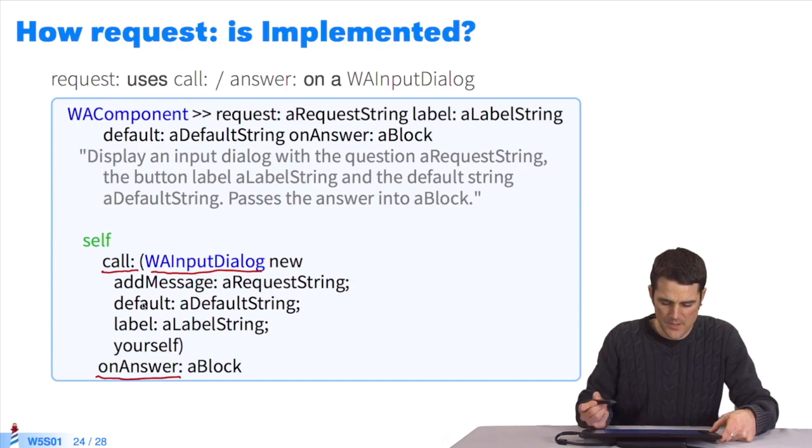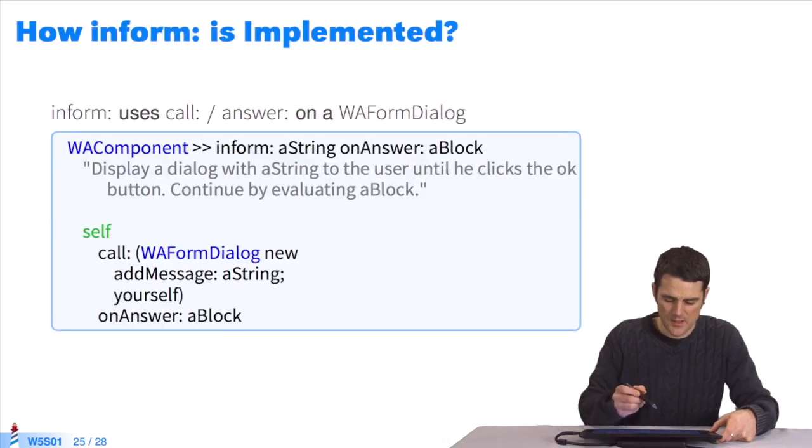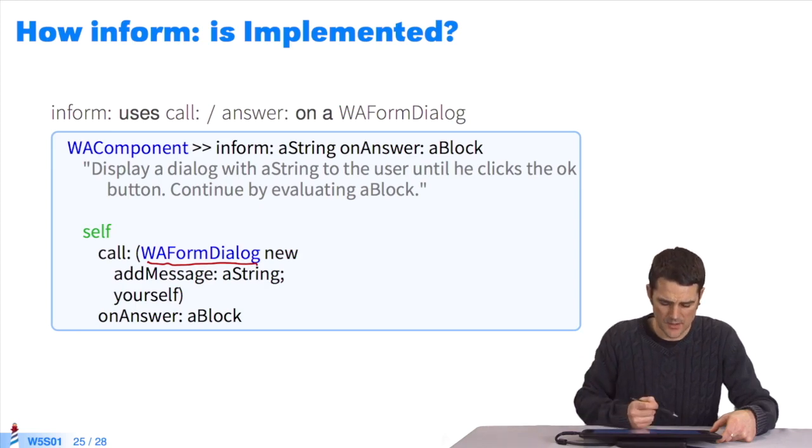If we take a look at how inform is implemented, it also uses a call answer, but on another type of component, which is a form dialog. If we do self call form dialog, we'll display the string with an OK button to say, OK, he's seen the string.